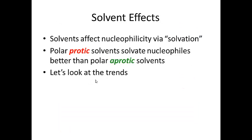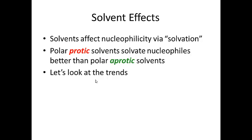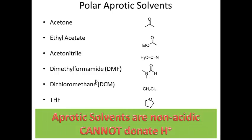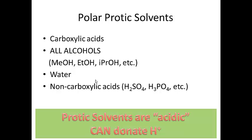Solvents can affect nucleophilicity through a phenomenon called solvation. In general, polar protic solvents solvate nucleophiles better than polar aprotic solvents. Polar aprotic solvents include acetone, DMF, and THF — what we need to remember is that they don't donate H+; they're non-acidic. Polar protic solvents include carboxylic acids, all alcohols, water, and other types of acids. These protic solvents can donate H+. Protic versus aprotic solvents make a difference in how nucleophilic a particular nucleophile is.